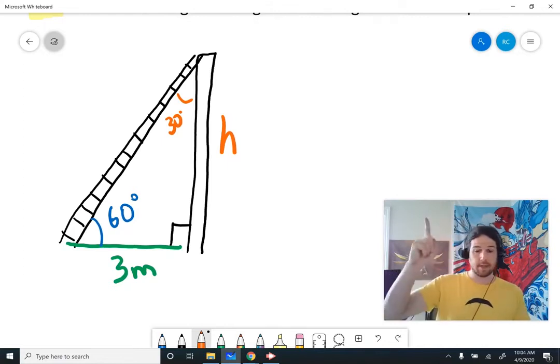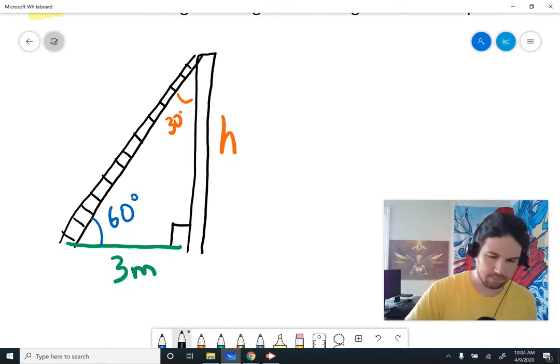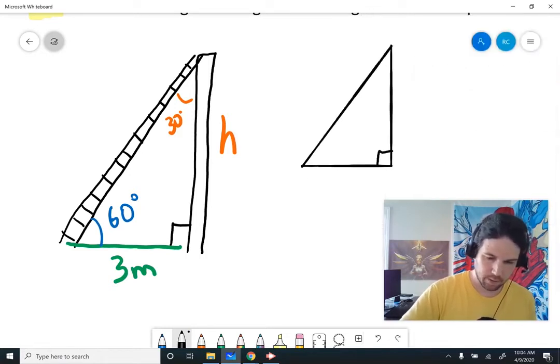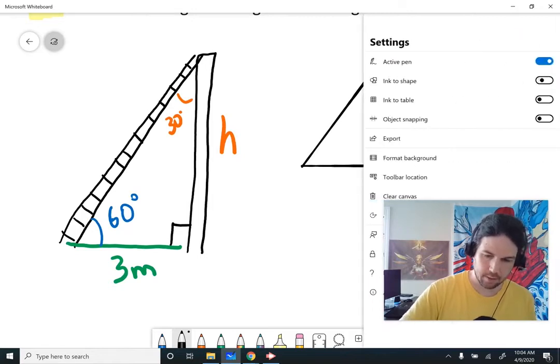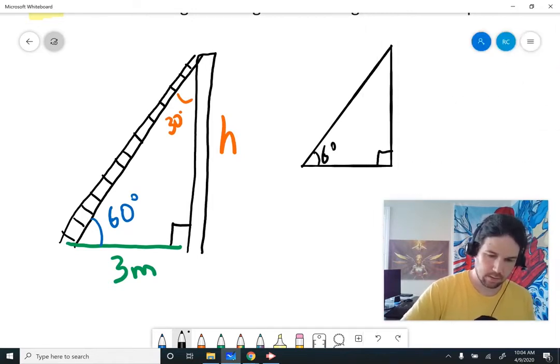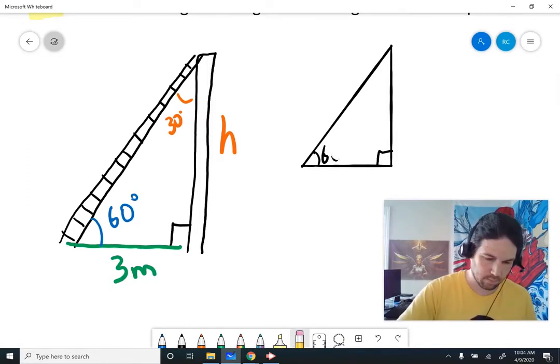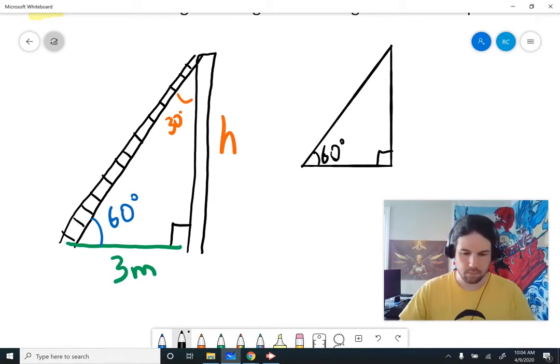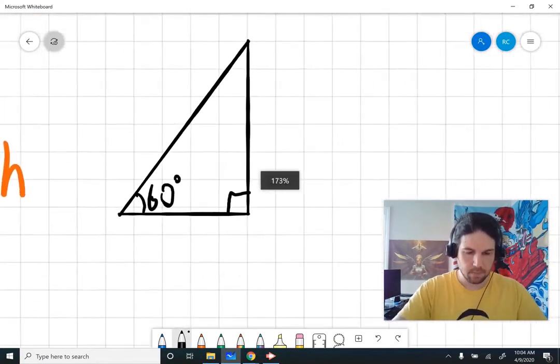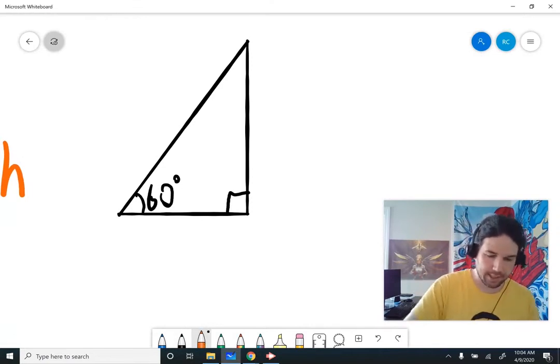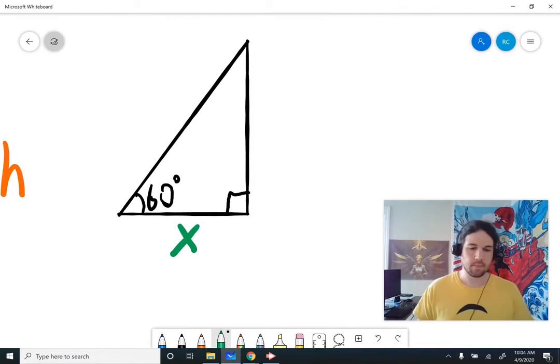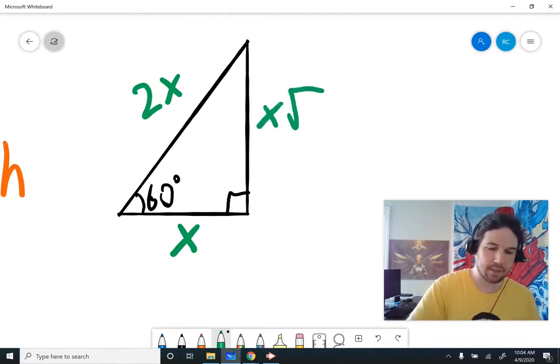Now, we remember, I hope, quick review, that when you have a 30-60-90 triangle, that's awful, let's try that again. If you recall, whatever the short leg is, the hypotenuse is 2 times the short leg, and the opposite side is the short leg times the square root of 3.